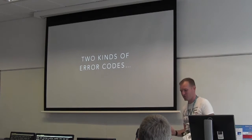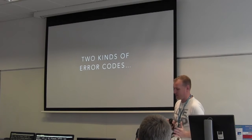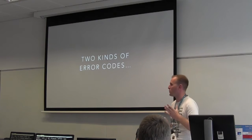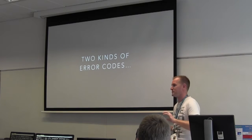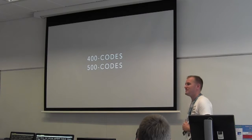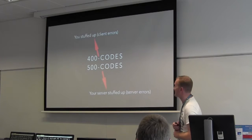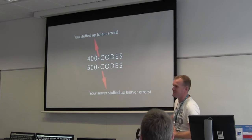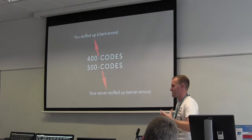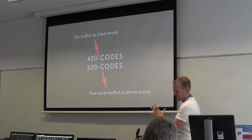The answer lies in error codes and other kinds of things. Before you dive into debugging, you need to understand that there are two kinds of error codes you'll run into most often. There are 400-based error codes and 500-based error codes. Simplified: 400 means you stuffed up — it's a client error. 500 means it's the server doing something it shouldn't be doing, or not processing something correctly. That's a really simplified version.